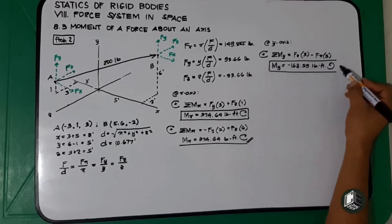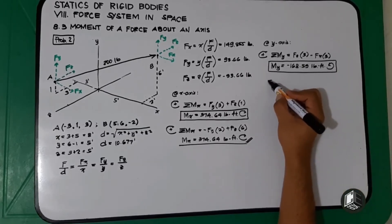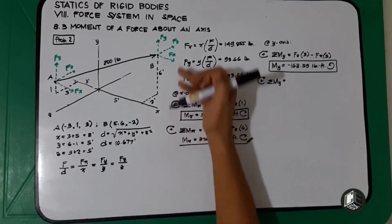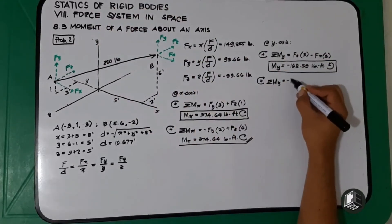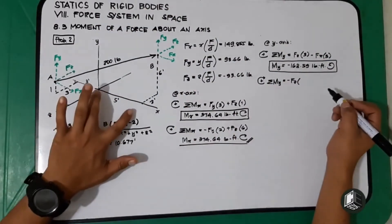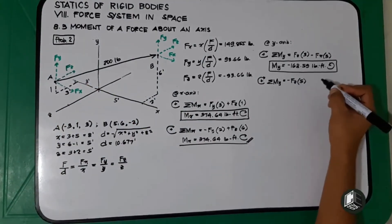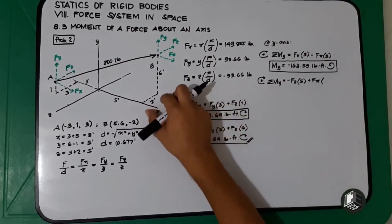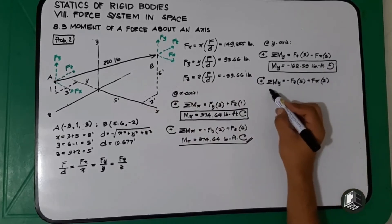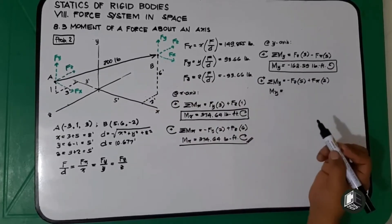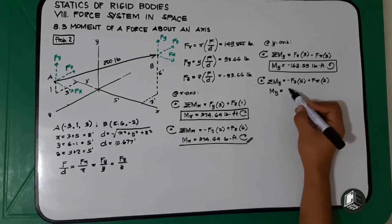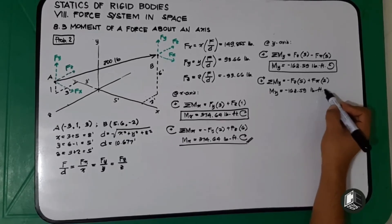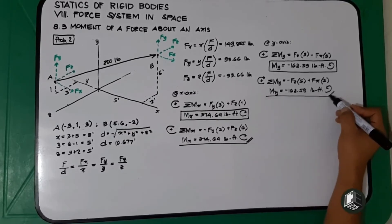Verifying from point B: summation of moment at y (clockwise positive) — Fz rotates counterclockwise so negative Fz times 5 feet, plus Fx rotates clockwise so positive Fx times 2 feet. The moment at y is the same: negative 168.59 pound-feet, counterclockwise.